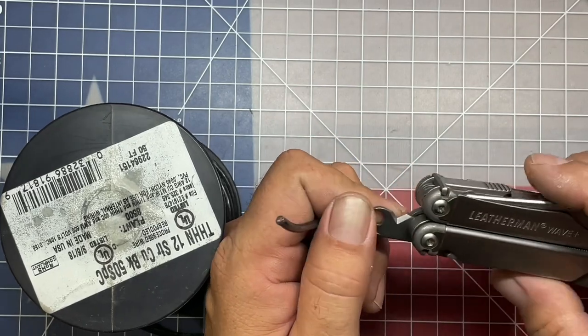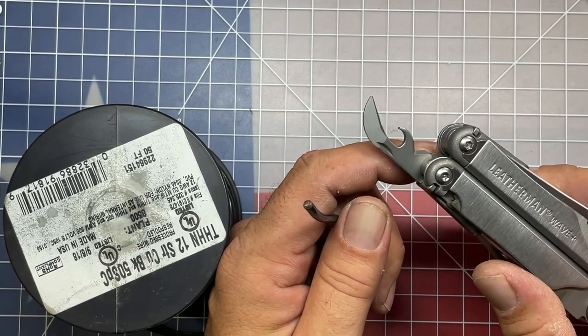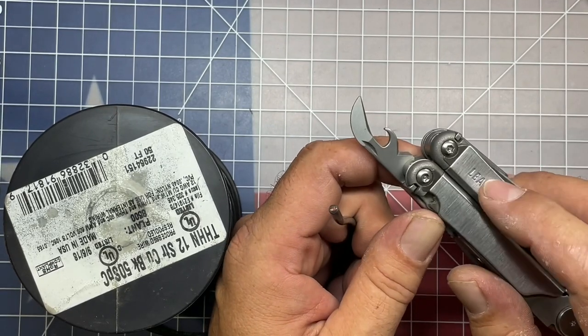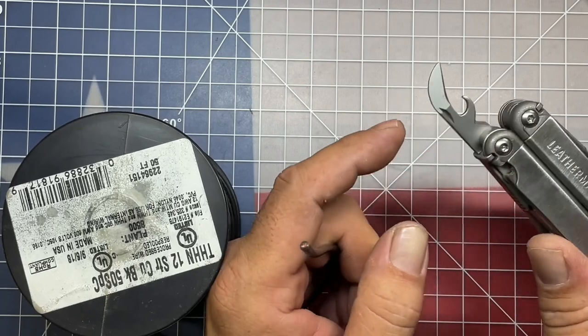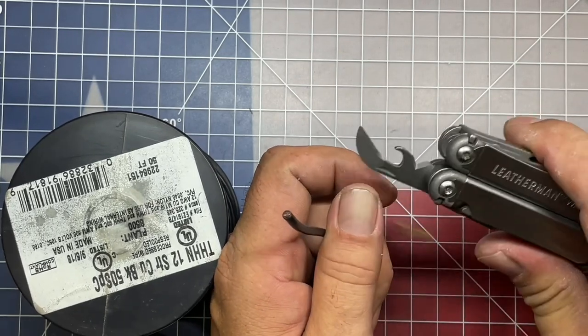Especially when you're working with smaller wire, you just really can't do it very effectively. The most effective way that I found to strip insulation off of a wire when using a Leatherman tool, especially the combination tool that comes in most Leatherman multi-tools, is to get it open.